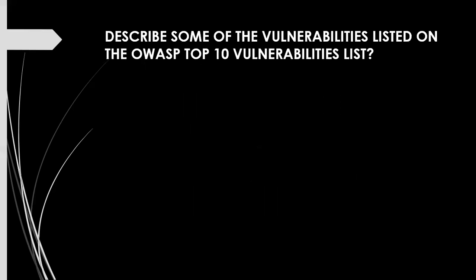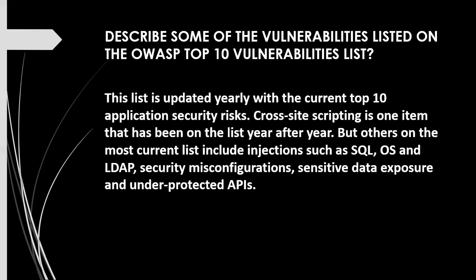The next question is: describe some of the vulnerabilities listed on the OWASP Top 10 vulnerabilities list. This list is updated yearly with the current top 10 application security risks. Cross-site scripting is one item that has been on the list year after year. Others on the most current list include injections such as SQL, OS, and LDAP; security misconfiguration; sensitive data exposure; and under-protected APIs.